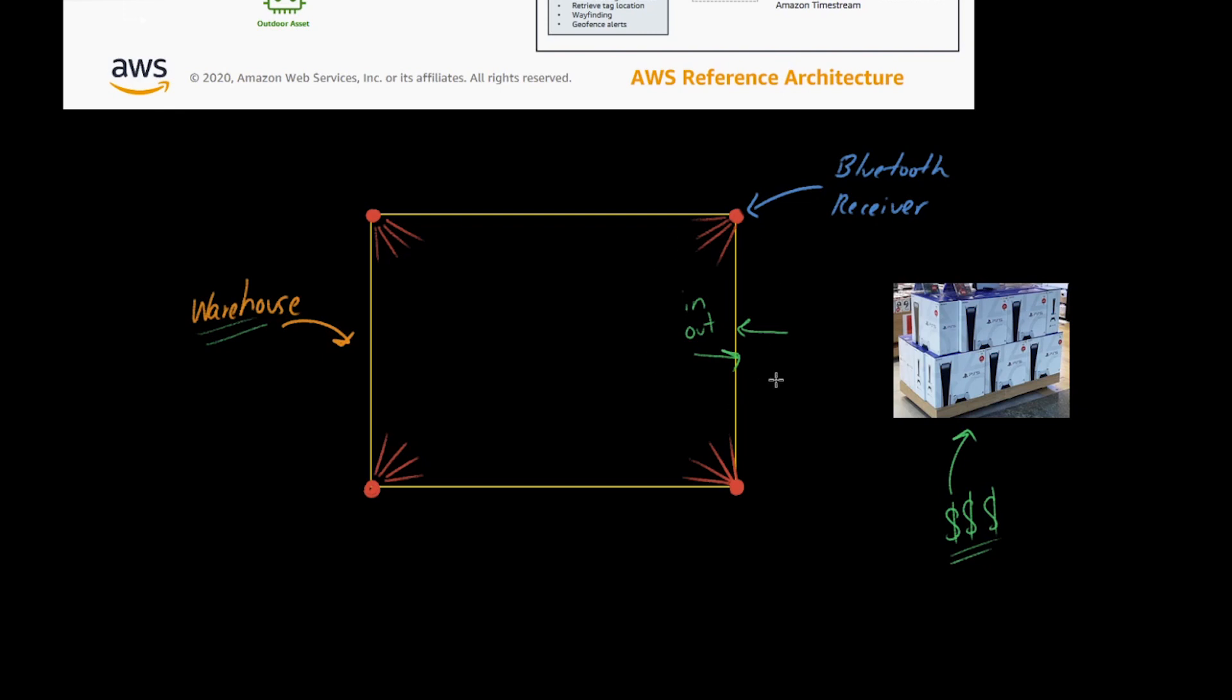Those are the types of events to expect from our back-end architecture: we're going to get some ins and outs, and then we're also going to get live real-time event updates as our skid of PS5s travels. We're going to get live geolocation coordinates for each one.